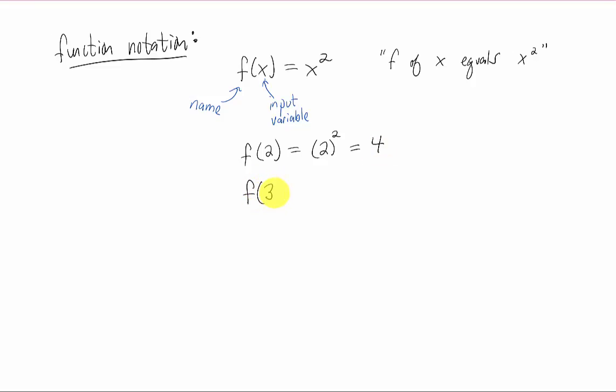What if we want to plug 3 into our function? We just make the input variable 3. And on the right side what the function is going to do is just take that number and square it. And it's going to spit out the number 9.